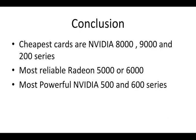In conclusion: if you're looking for a cheap card, look at the NVIDIA 8000 or 9200 series. For the most reliable OS X compatibility, look at the Radeon 5000 or 6000 series. And if you're building a powerhouse machine, look at the NVIDIA 500 or 600 series. Please remember to subscribe and I'll see you guys later.